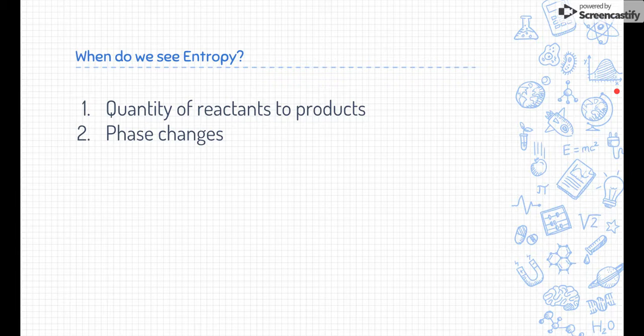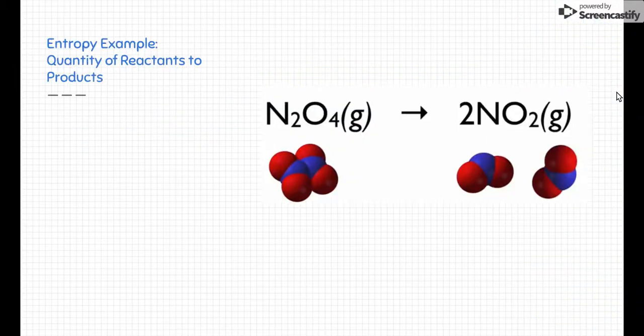Well, we really see it in two main ways. One is in the quantity of reactants to products, when that changes, and the other one is when phases change. So let's take a look at those two examples. So here's the first example, when the quantity of reactants to products change.